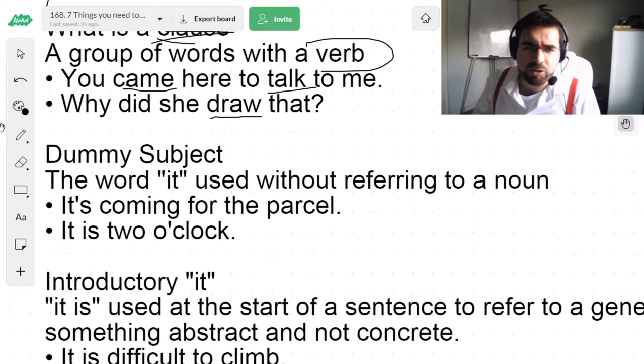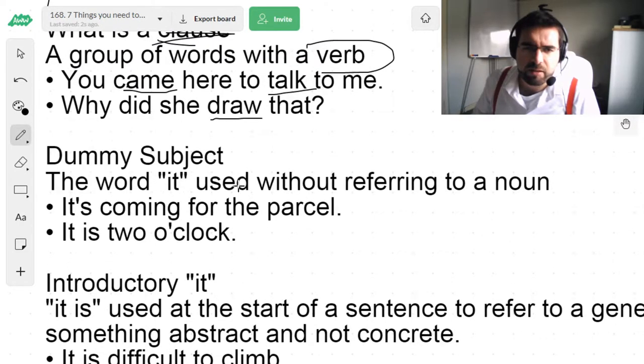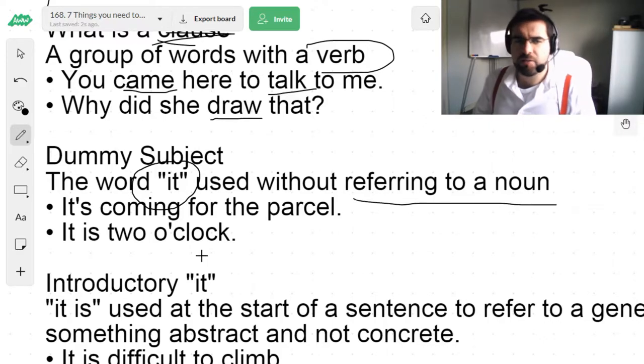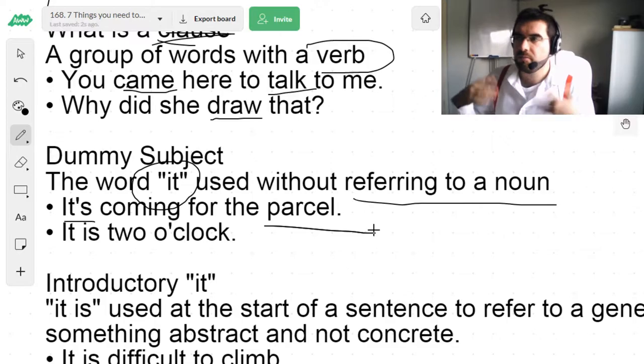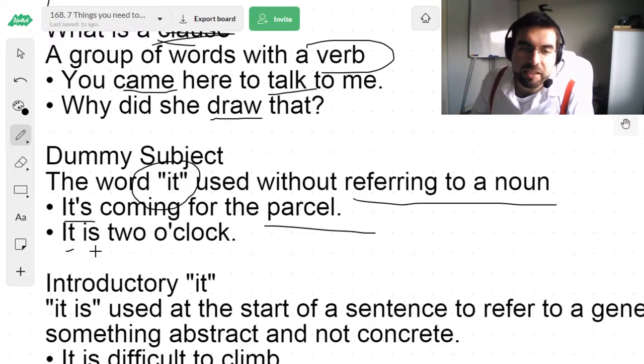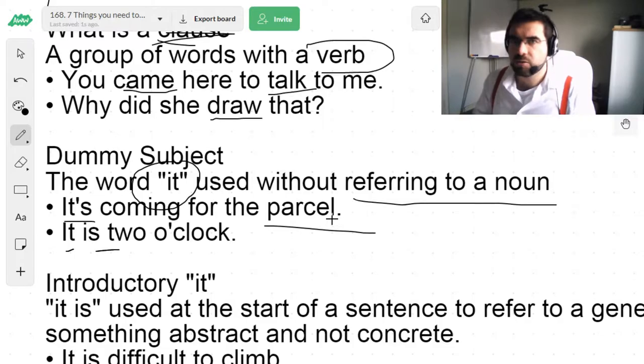Now, understand what a dummy subject is. Essentially, using it without referring to a noun. It's coming for the parcel. It. Who is? He, she, them, her, that. I don't know, but it. It's coming for the parcel. It is two o'clock. What's two o'clock? The time. It's cold.